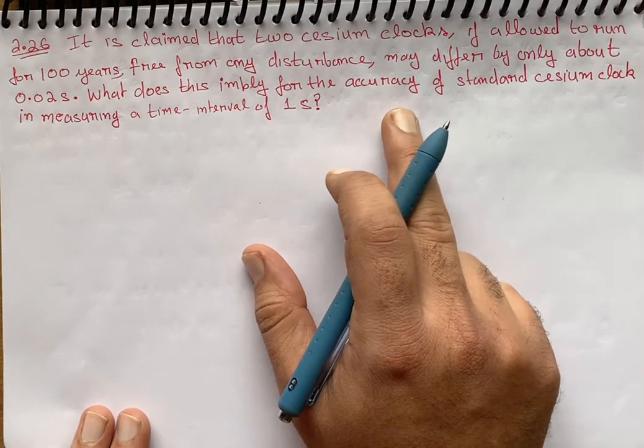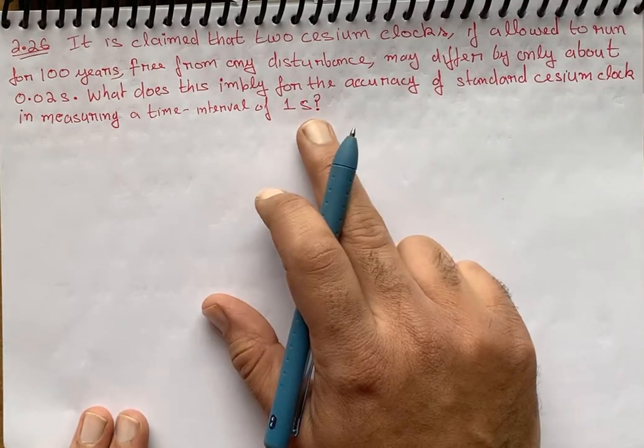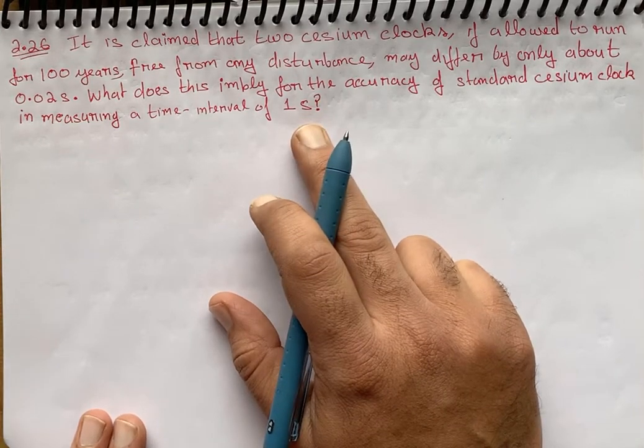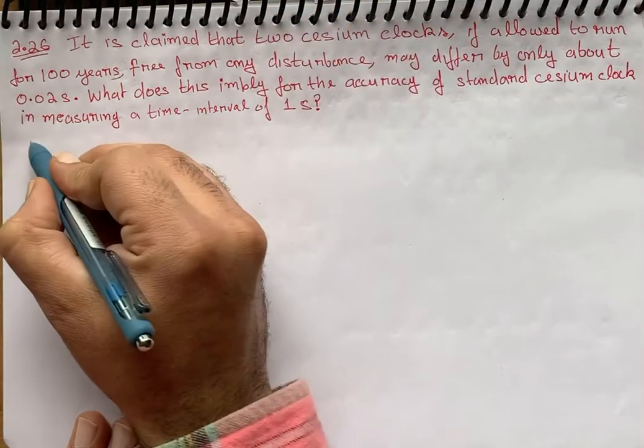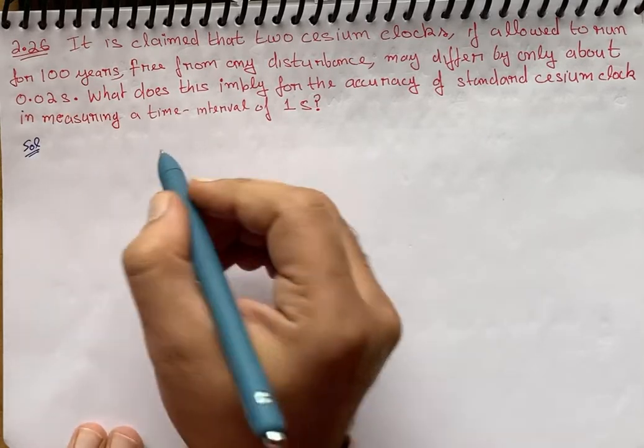What does this imply for accuracy? What is the relation of a cesium clock time interval of one second? So let's start with the solution here.